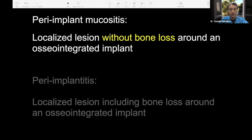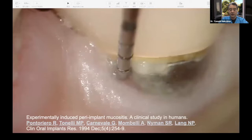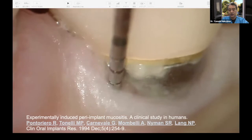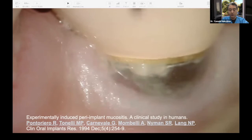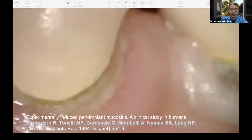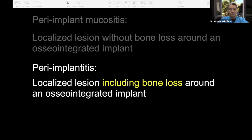Before my presentation, I would like to confirm the definition of peri-implant disease. There are two diseases. One is peri-implant mucositis — it is localized inflammation without bone loss around the implant. The other is peri-implantitis, which is localized inflammation that includes bone loss around the implant. The key difference between mucositis and peri-implantitis is bone loss.